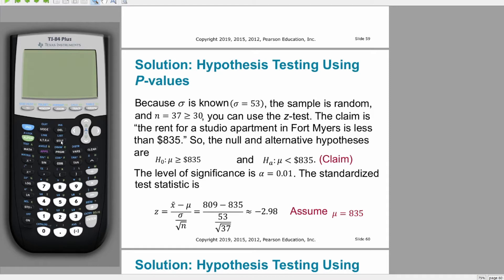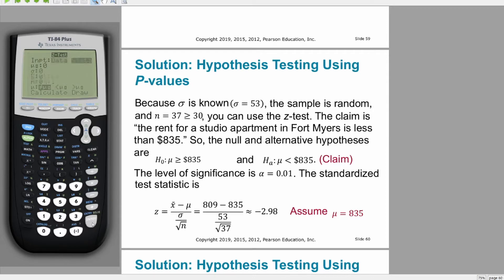We're going to hit stat, go to tests, and since we know the deviation sigma, we're going to use the z-test with stats. We are told that mu-naught, the supposed parameter, is 835, sigma is 53, and we're comparing it to a sample mean x-bar of 809 with a sample size of 37. We can use the central limit theorem here because the data is approximately normal and the sample is large enough.